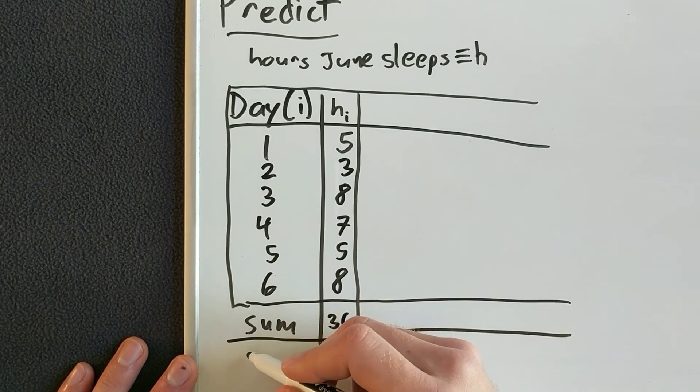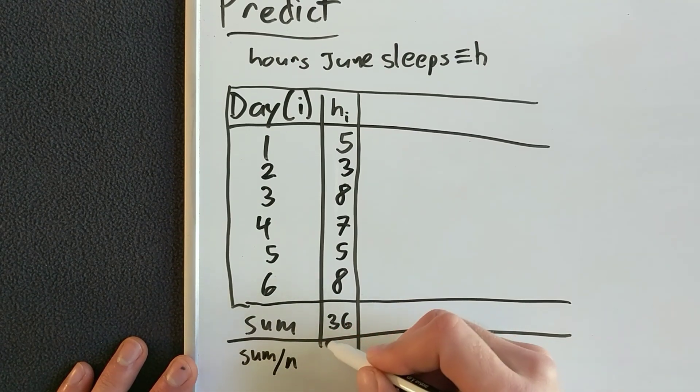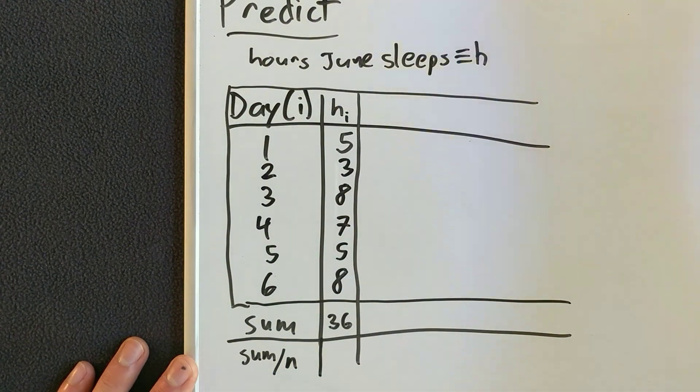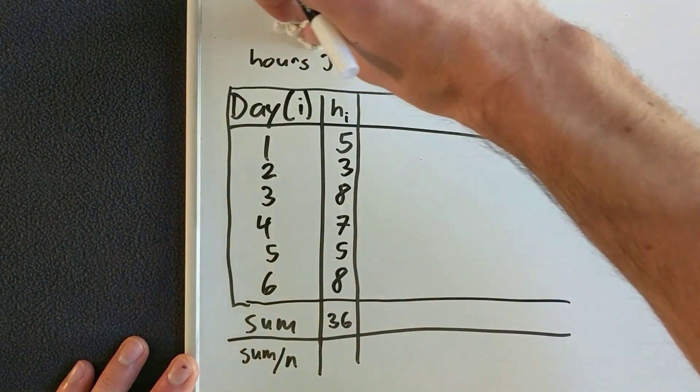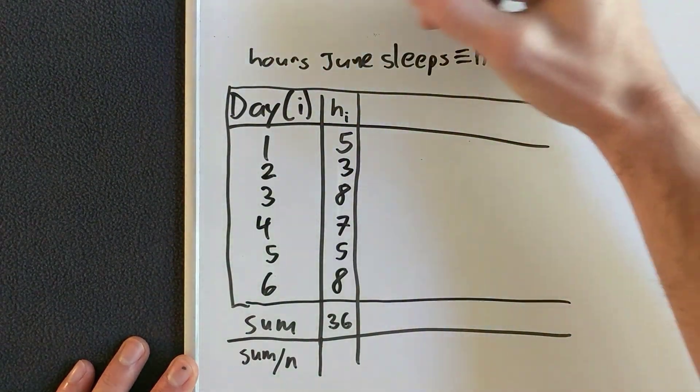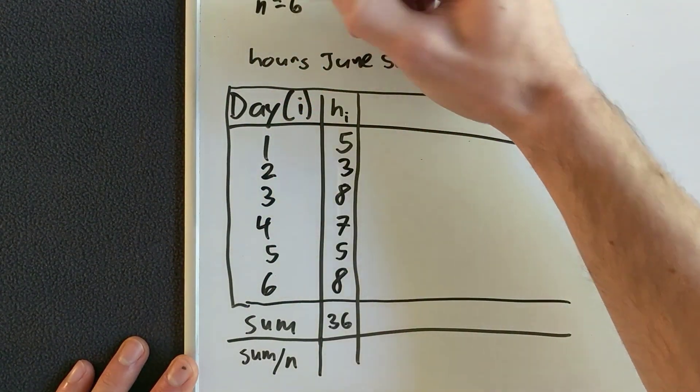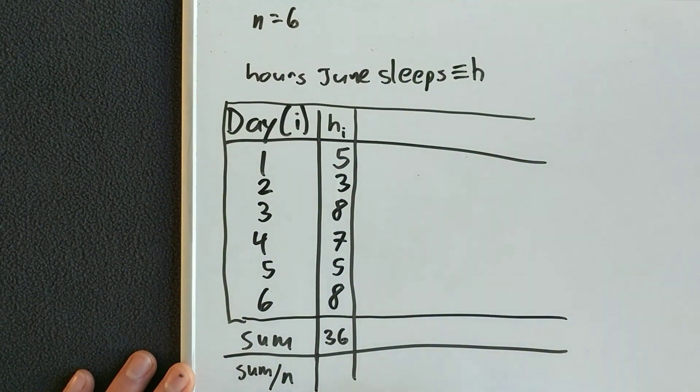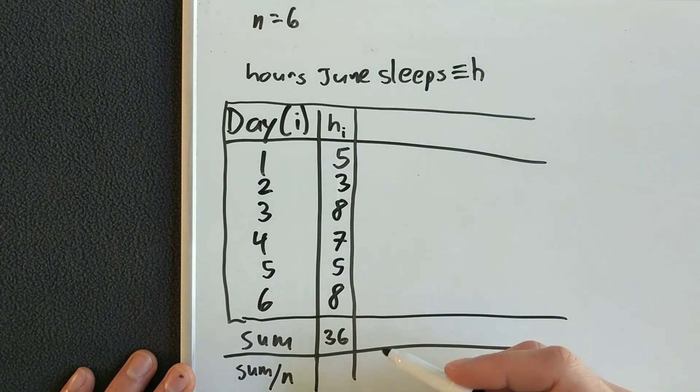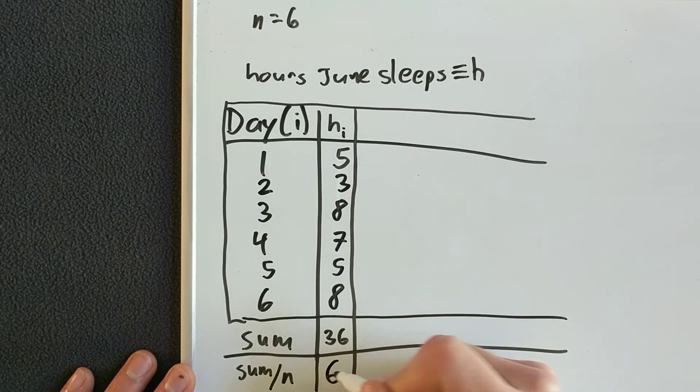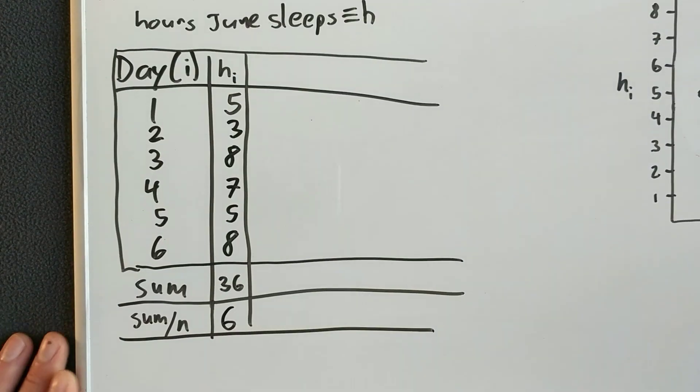And then to calculate the average, we will do sum divided by the number of observations. So for us, the number of observations is six. And thirty-six divided by six will give us a nice even number, six. It's almost like I knew that these would be nice numbers.